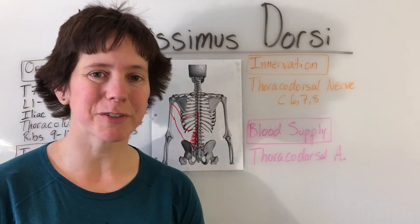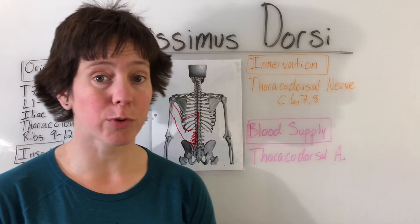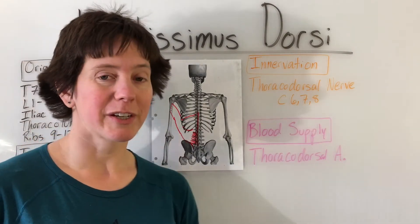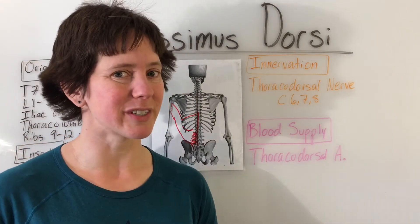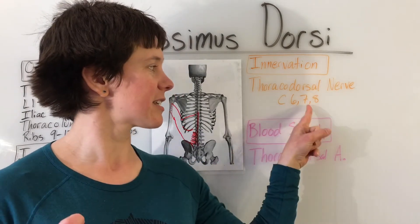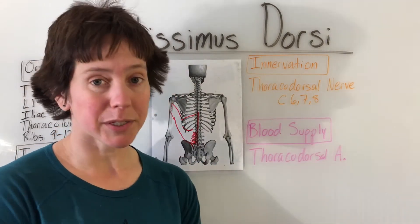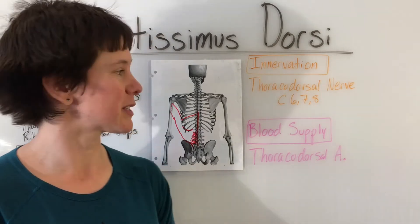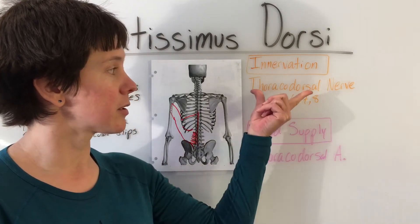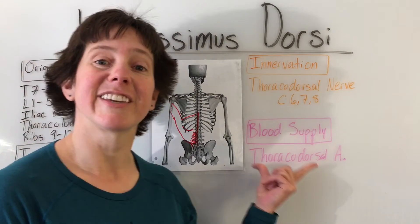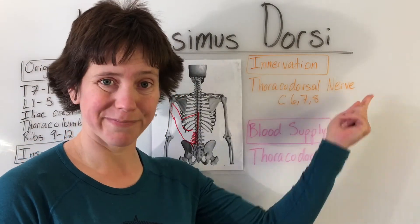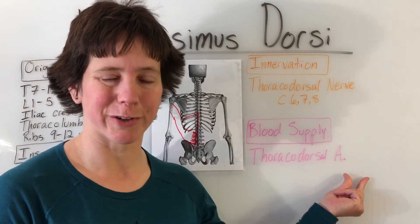The innervation for the latissimus dorsi is the thoracodorsal nerve C6, 7, and 8. A fun rhyming way to remember this is: keep the lat straight, 6, 7, 8. The blood supply is easy to remember because it shares the same name as the nerve — the thoracodorsal artery.